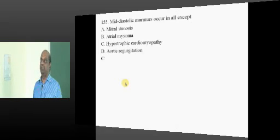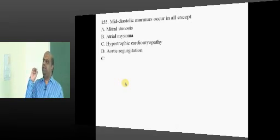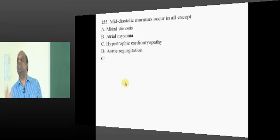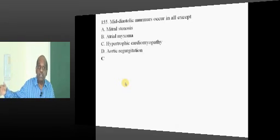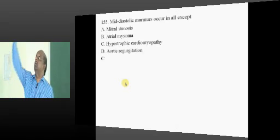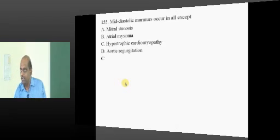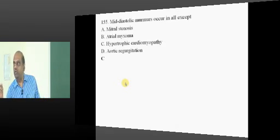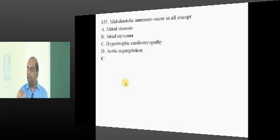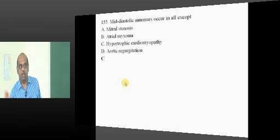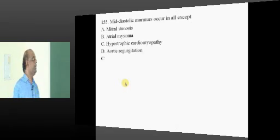That is called Austin Flint. In minor degrees of aortic regurgitation, there is no Austin Flint. Only when aortic regurgitation is severe — when the aorta is raining strongly into the ventricle — only then will blood flow from atrium to ventricle get resistance from that backward flow. Hence, Austin Flint is a marker of the most severe aortic regurgitation.